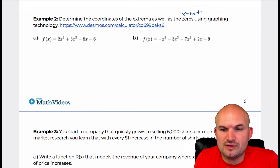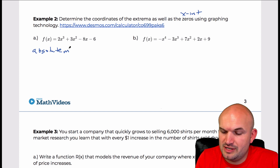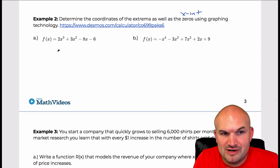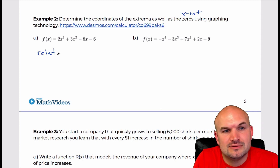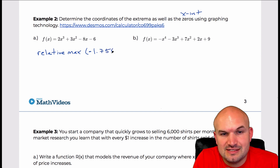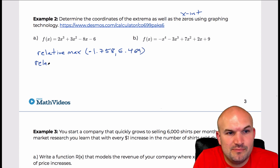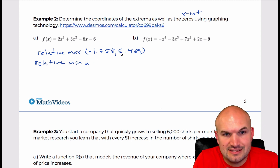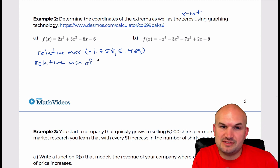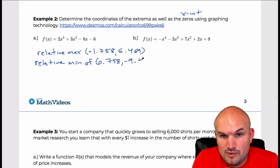When we're writing the coordinates of extrema, we want both the x and the y coordinate. We can state there is a relative max at the coordinate point negative 1.758, 6.469. And there is a relative min at 0.758, negative 9.469.